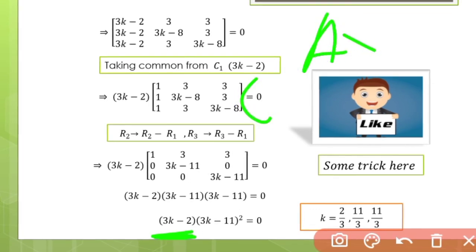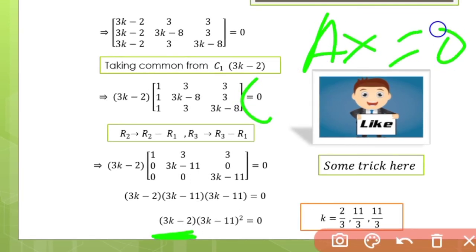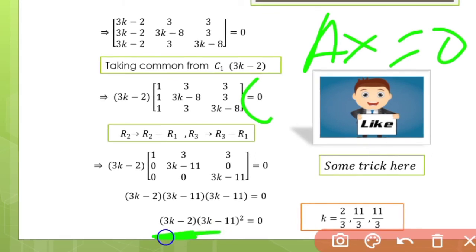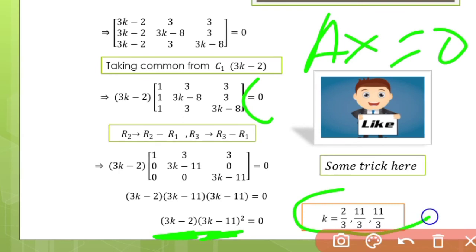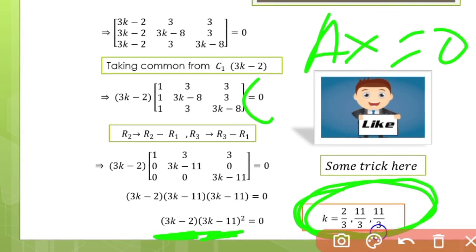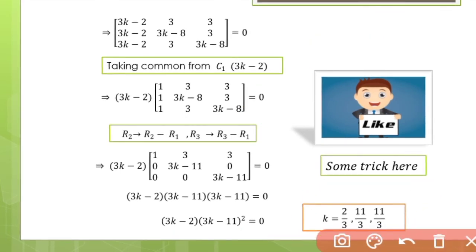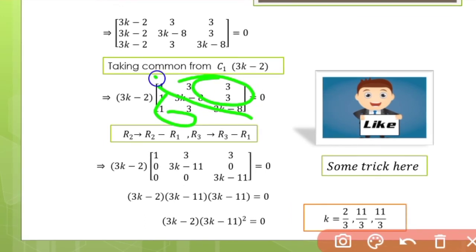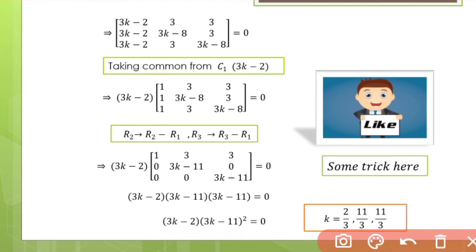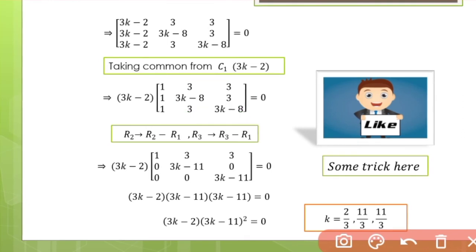Solving the equation (3k - 2)(3k - 11)² = 0, we get the values of k. The answer is k equals 2/3, 11/3, and 11/3. This is the final answer for our question.